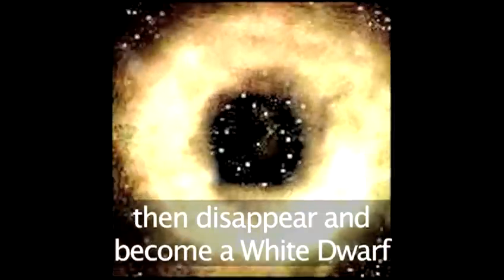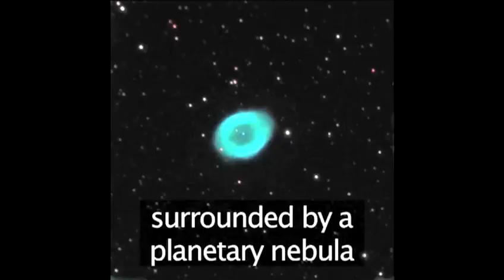Then gravity will make it condense and it will collapse upon itself. Its light will go out and it will become a white dwarf, surrounded by a planetary nebula.